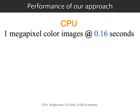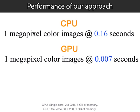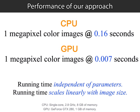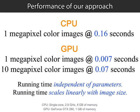Using this approach, we are able to filter 1 megapixel color images in under 0.2 seconds on a CPU. A GPU implementation can filter the same image in only 7 milliseconds. Furthermore, the performance of our method is independent of the filtering parameters, and the running time scales linearly with the image size. Thus, we can filter 10 megapixel color images in under 0.1 seconds.